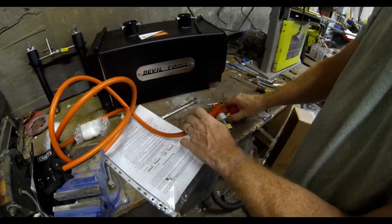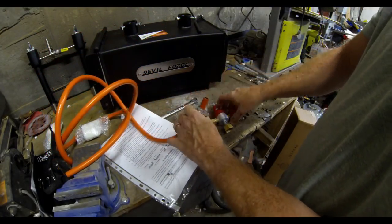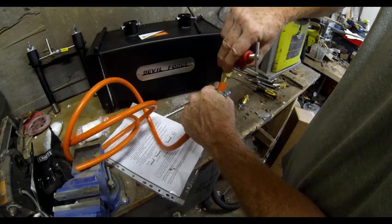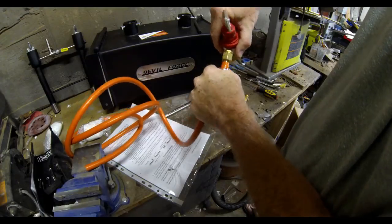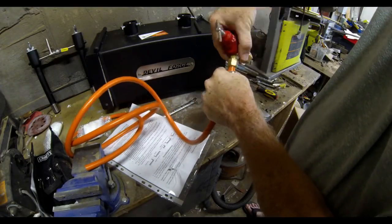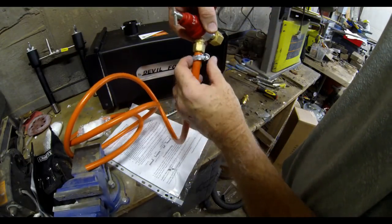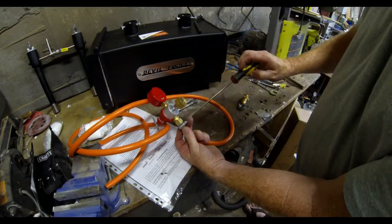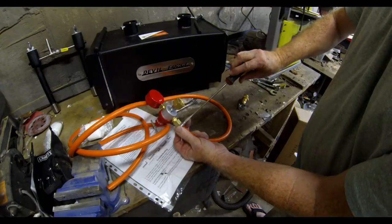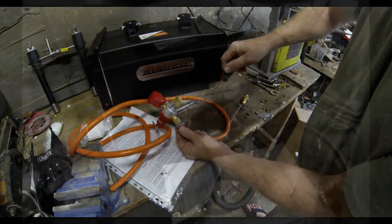The hose just gets pressed onto that nipple and secured with a hose clamp, which is also provided. You can tighten up on those hose clamps just with a screwdriver. I like to snug them up with a screwdriver, and then I do put a wrench on them.